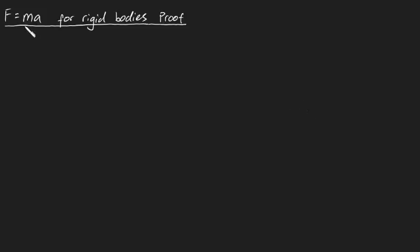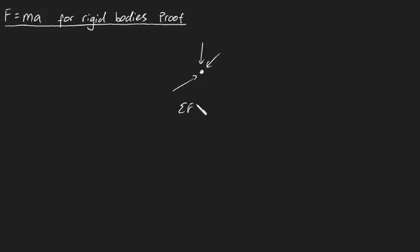G'day guys. In this video I'm going to be talking about F equals MA for rigid bodies. You probably already know that if we've got a particle with a whole bunch of forces acting on it, then the net force acting on our particle is going to be equal to the mass of your particle times by your acceleration of your particle. I'm going to assume you already know this formula pretty well.